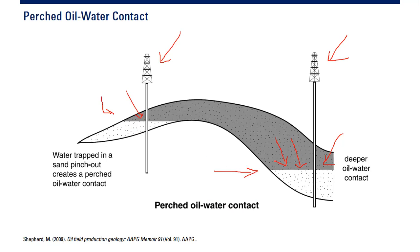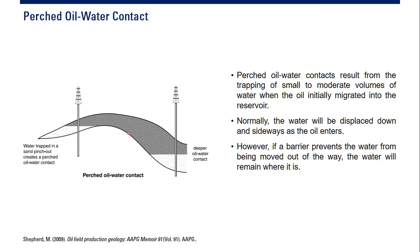This shallow, or perch, oil-water contact exists because of water trapped in a sand pinch-out. The pinch-out forms the boundary — the sand pinch-out creates the perch oil-water contact. Perch oil-water contacts result from the trapping of small to moderate volumes of water when oil initially migrated into the reservoir.